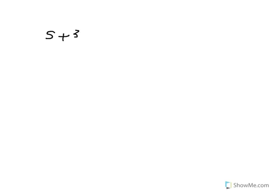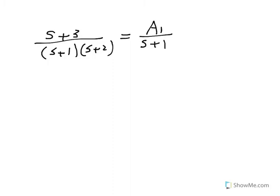Let me go to the next page and rewrite this. We have s plus 3 divided by s plus 1 times s plus 2 equals a1 over s plus 1 plus a2 over s plus 2. There are different ways you could do this, but I'm going to use the way they show you in the textbook, even though I learned it differently many years ago.